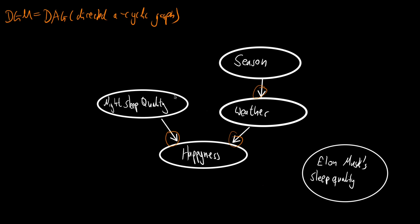Before that, let us associate shortcuts or abbreviations for these random variables. Let's call this N, let's call this S, W, and H. And there is another random variable that is not linked to any of the others — this is Elon Musk's sleep quality. Let's call this E.